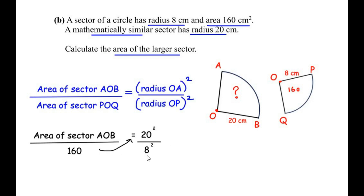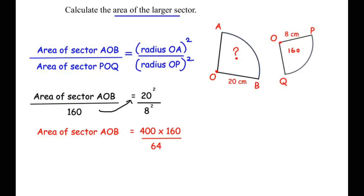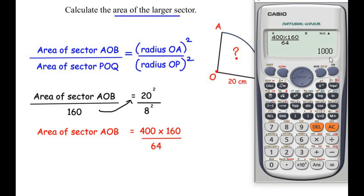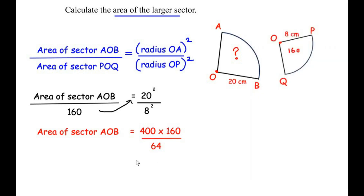Cross-multiplying: area of sector AOB equals 20 squared times 160 over 8 squared, which is 400 times 160 over 64. This gives a value of 1000. So the area of the larger sector is 1000 centimeters squared.